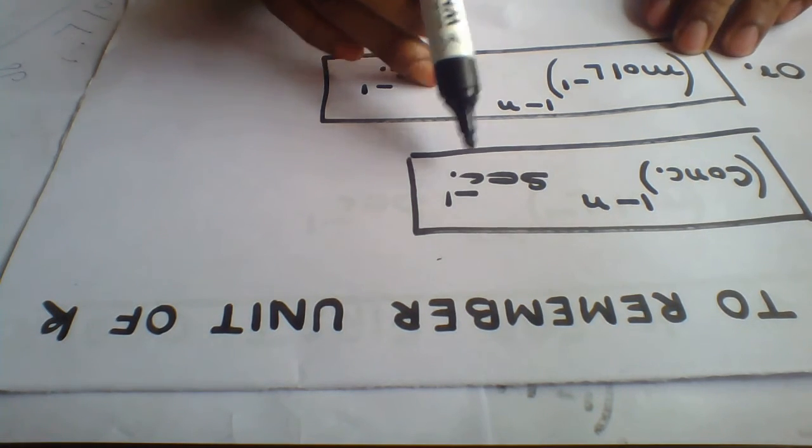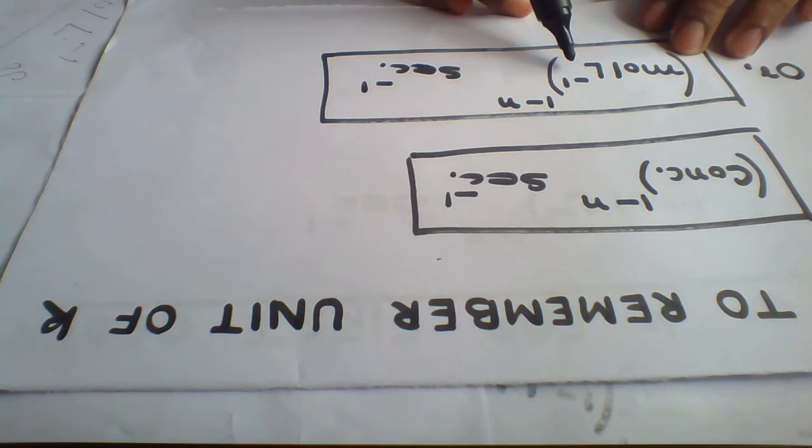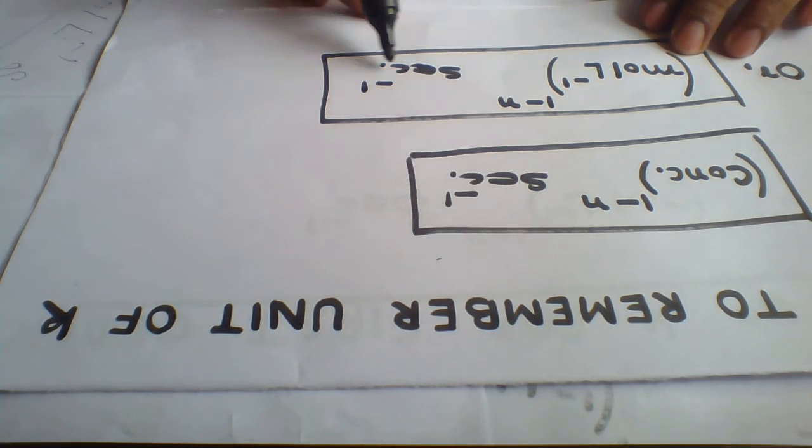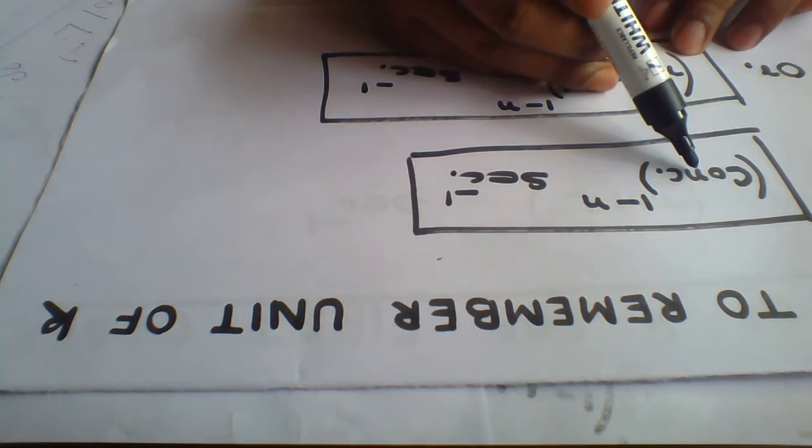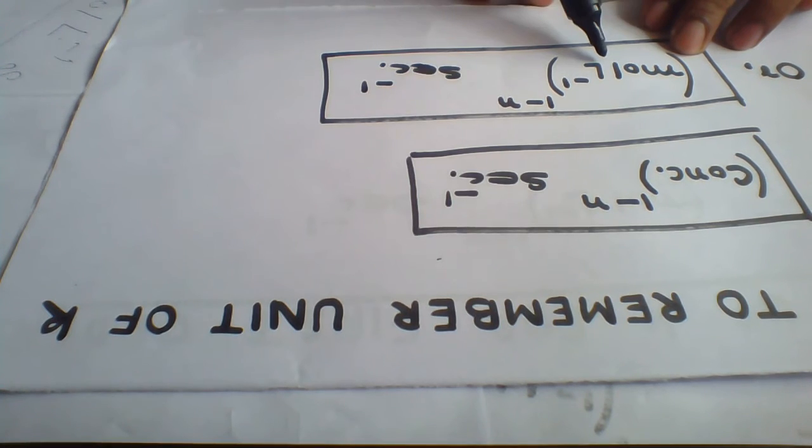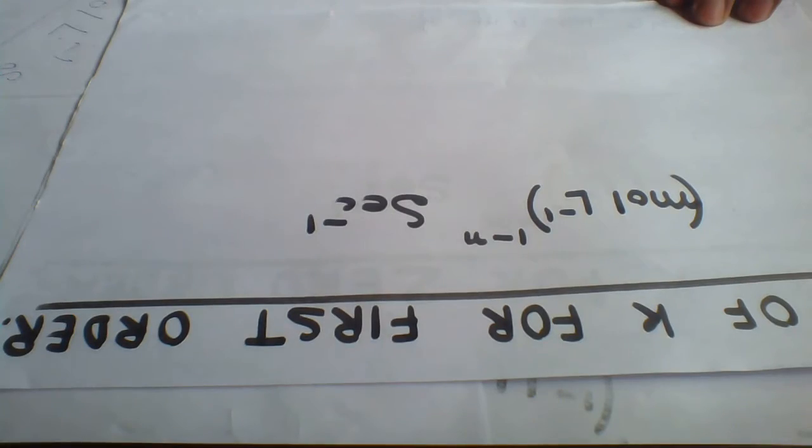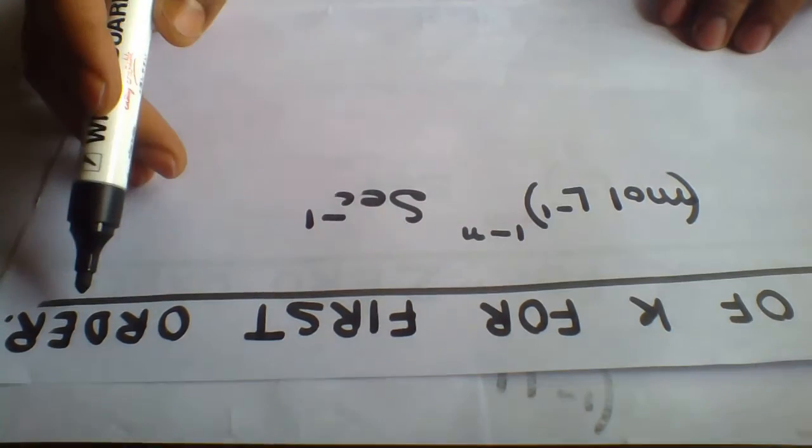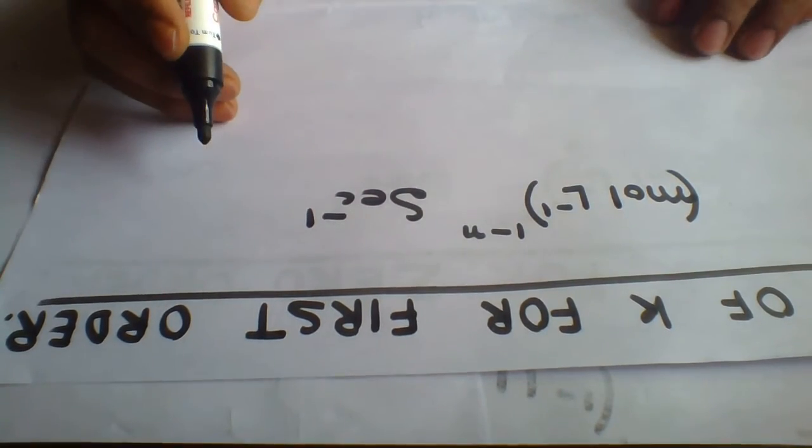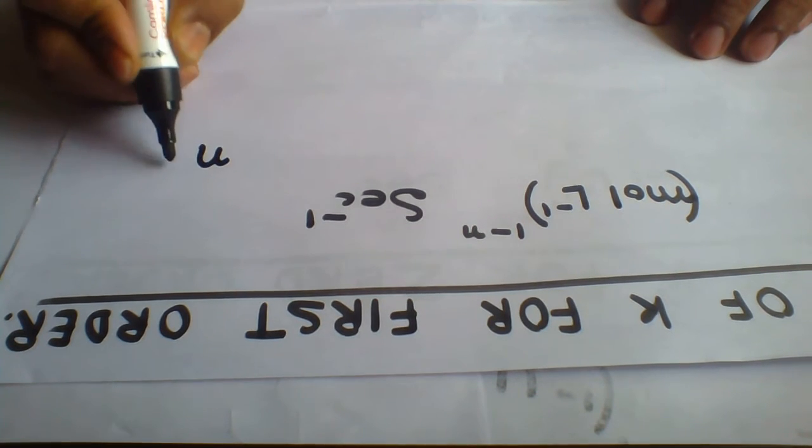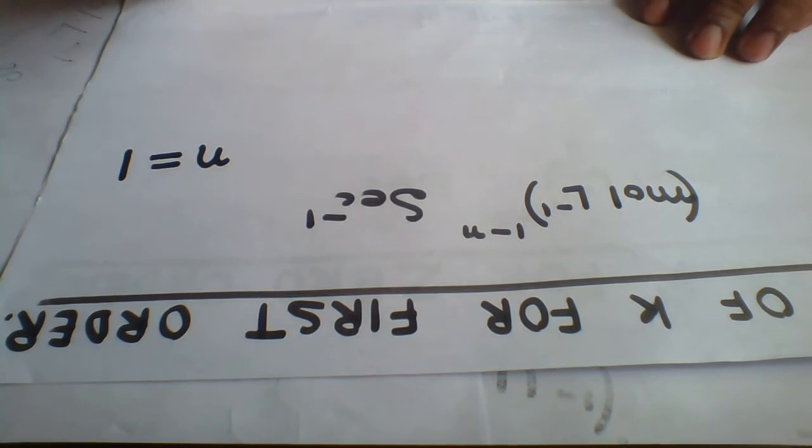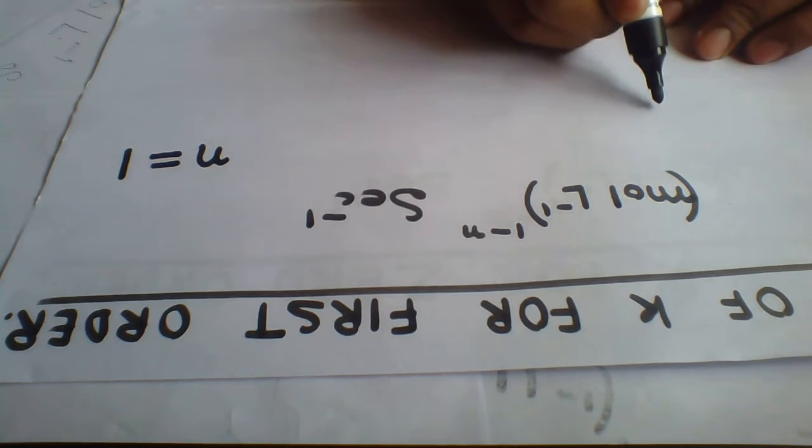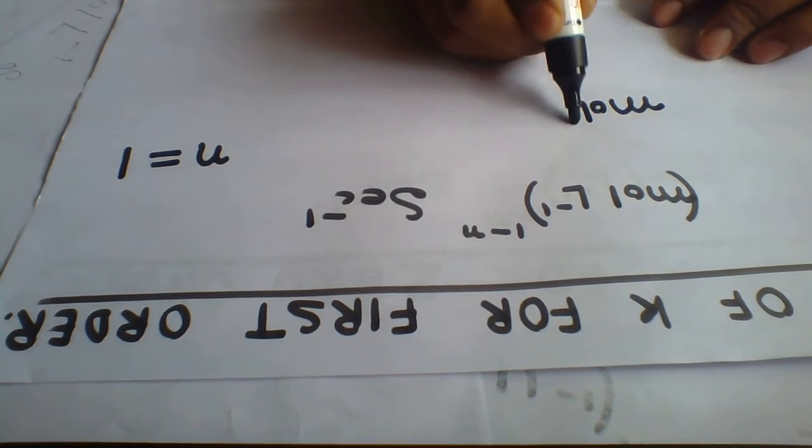Or moles per liter to the power 1 minus n, second inverse. Concentration is written in the form moles per liter. For the unit of rate constant for first order reaction, in case of first order reaction n is 1, so mole per liter to the power 1 minus 1, second inverse.